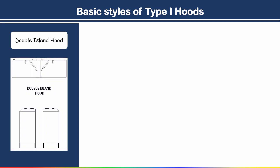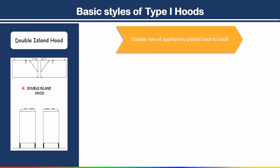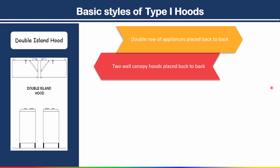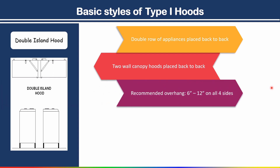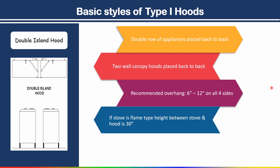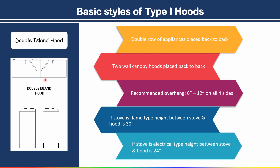Next in basic styles of type 1 hood is the double island hood. In a double island hood, appliances are placed back to back — a double row of appliances back to back. Two wall canopy hoods placed back to back. Recommended overhang for the double island hood is 6 to 12 inches on all four sides. For height between stove and hood: if the stove is flame type, maintain 30 inches; if electrical type, maintain 24 inches.